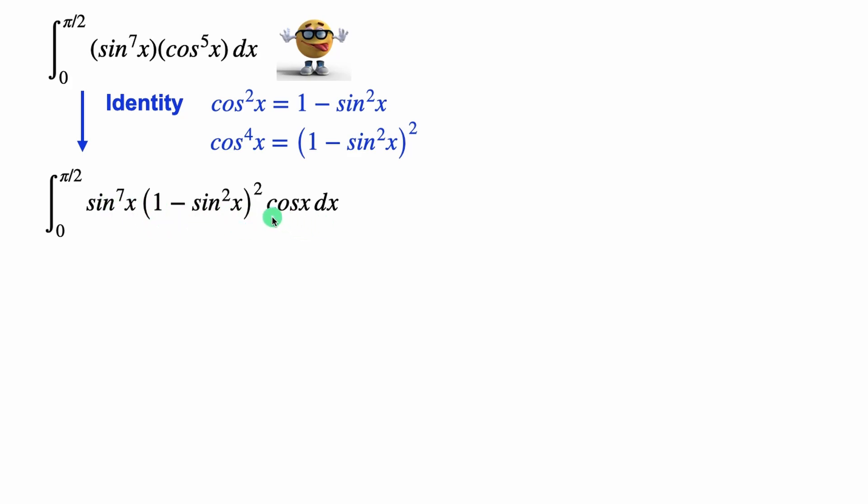Now this might look complicated, but remember cos is the derivative of sine, so we can do a u substitution where u equals sine of x, and then if we take the derivative, du equals cos x dx, so this cos x dx becomes du, and everything else, every other sine, becomes u.